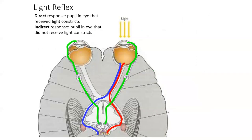When we shine a light into one eye — in this case the right eye — and the pupil constricts, that's what we call a direct response. Because of what is occurring in the midbrain with the oculomotor nerve, that response is also being received by the left eye in the form of an indirect response.